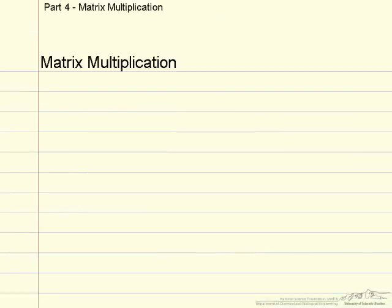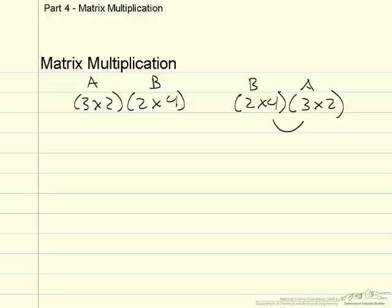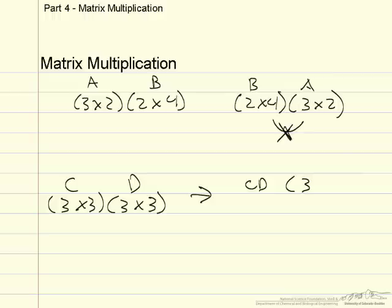These two matrices were 3 by 2 and 2 by 4. Normally you might try to switch the multiplication and calculate it in the other direction, but in this case if you tried to calculate B times A, the inner dimensions do not match, so you could not even begin to calculate it. Even if you did have two square matrices — say C and D were both 3 by 3 and the resulting matrix is also 3 by 3 — because C and D are most likely different matrices, if you reversed the order, even with the same size, you would most likely end up with a different matrix.